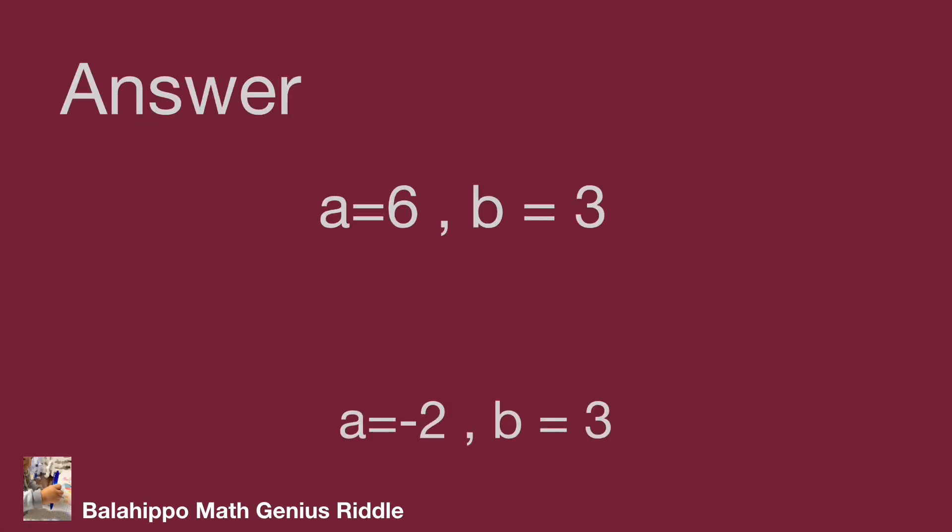Finally, we get two answers: a equal to 6 and b equal to 3, or a equal to negative 2 and b equal to 3. Do you get the same result? Hope you enjoyed the video. Thank you.